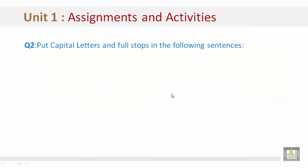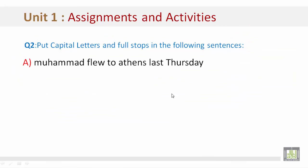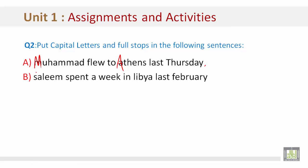Assignments and activities. Put the capital letters and full stops in the following sentences. For example A: Muhammad flew to Athens last Thursday. 'Muhammad' is a name and 'Athens' is a place — both are capitalized. We are also missing a full stop. For example B: Salem — always capitalize the beginning of sentences and names — spent a week in Libya. India — always capitalize names of countries — last February — always capitalize the month or day of the week. End with a full stop.